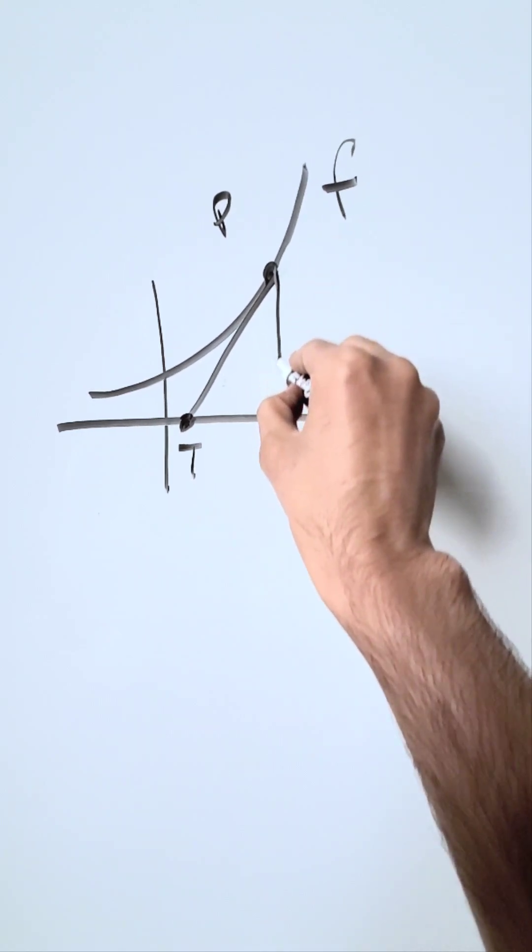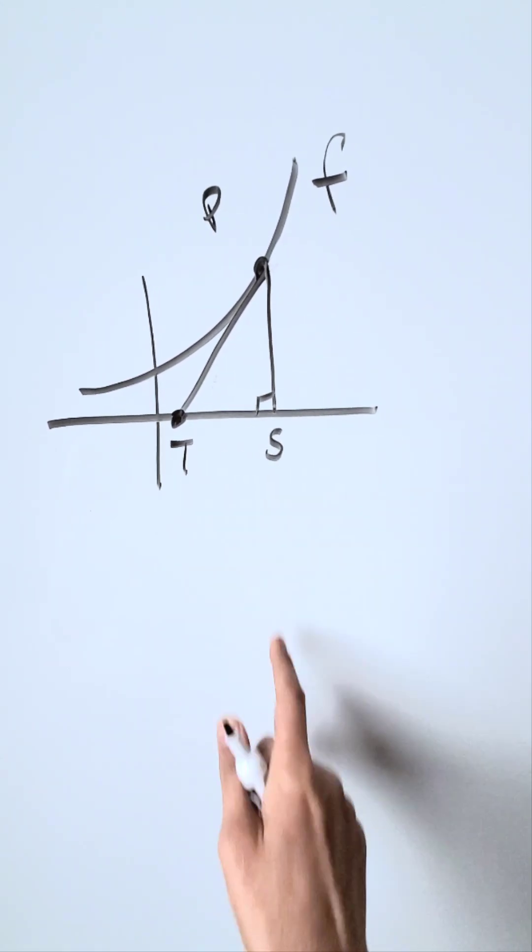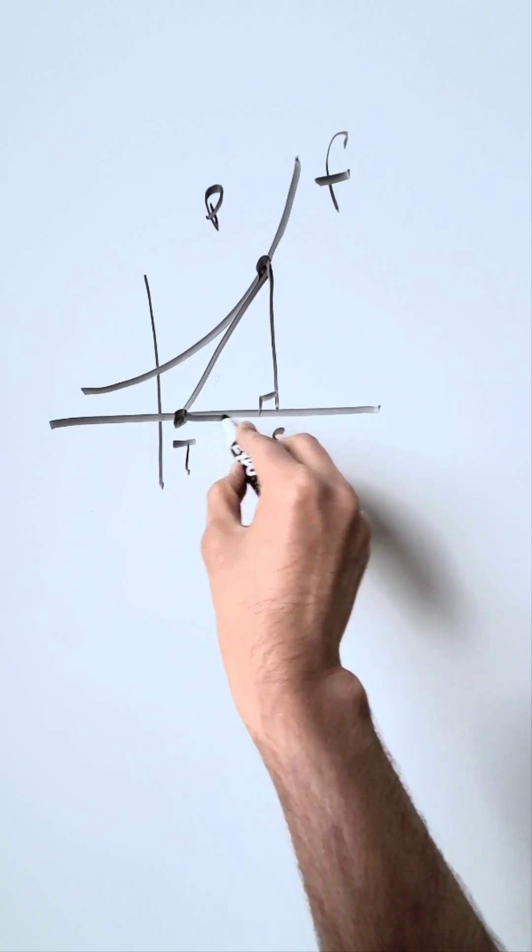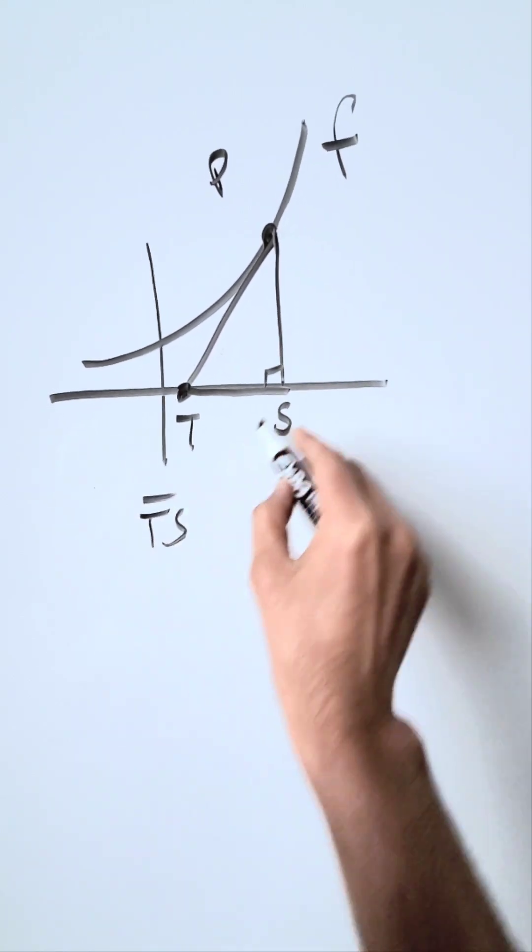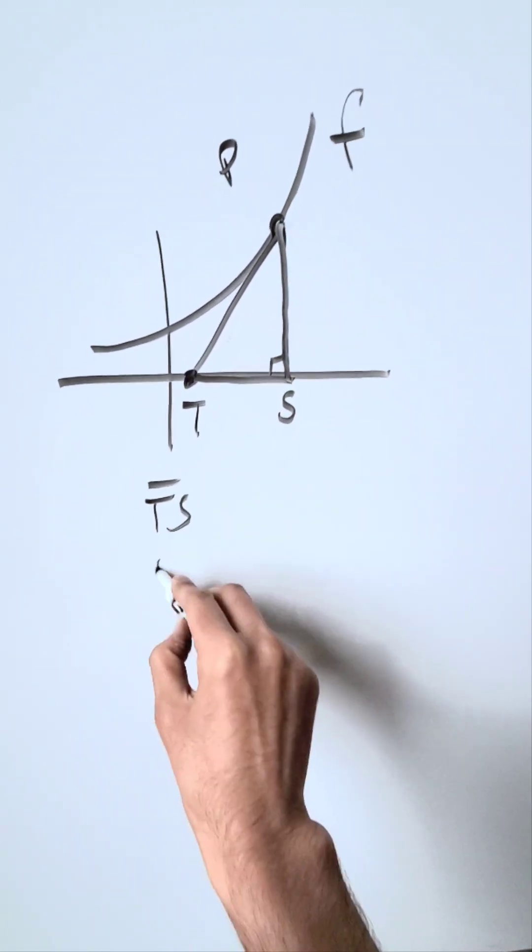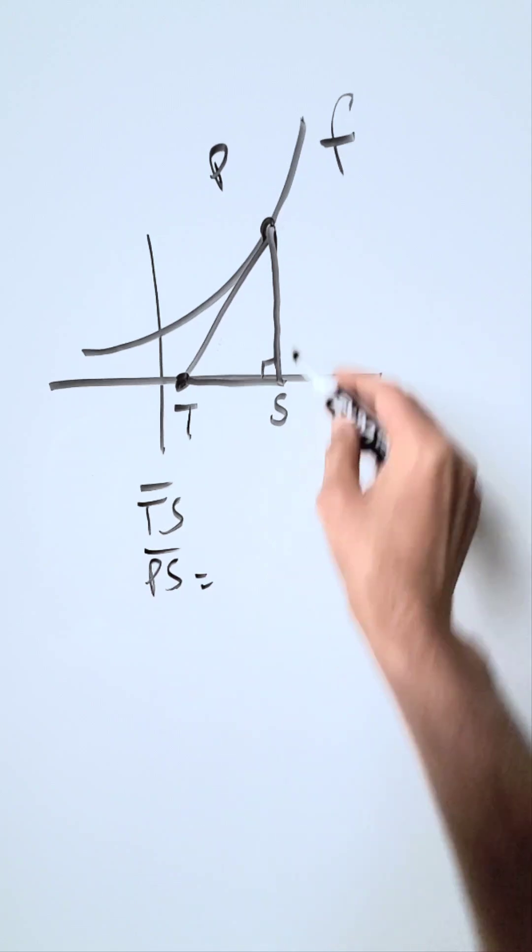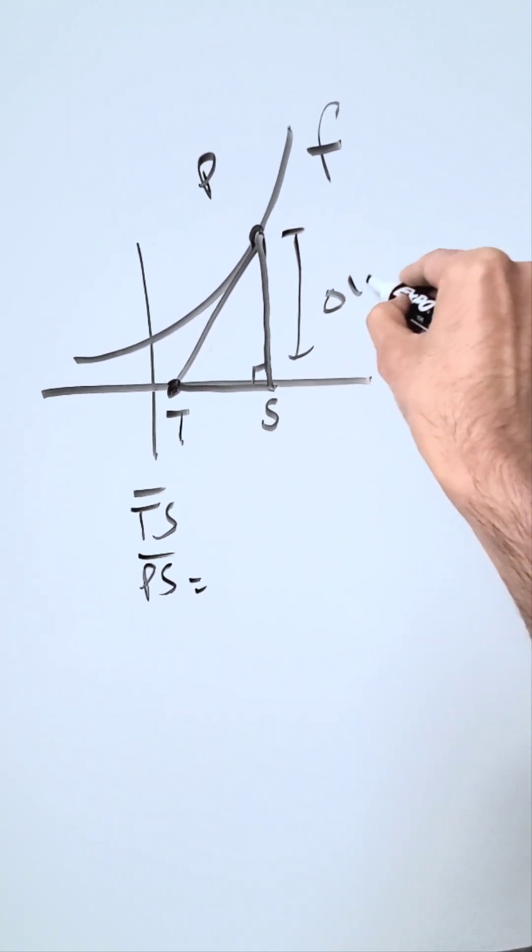From this point p, I'm bringing down a perpendicular. I'm going to label this s. I have two relevant segments: one is ts and the other is ps right over here. What are these? ps is nothing other than a delta y, a change in y.